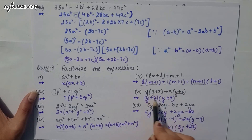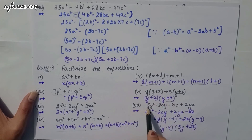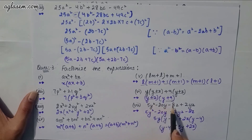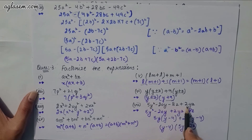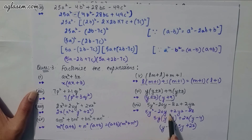Sixth part: y(y + z) + 9(y + z). Take (y + z) as common: (y + z)(y + 9).